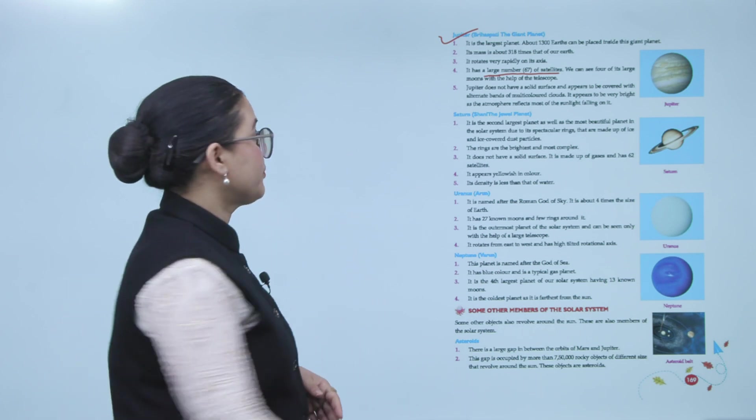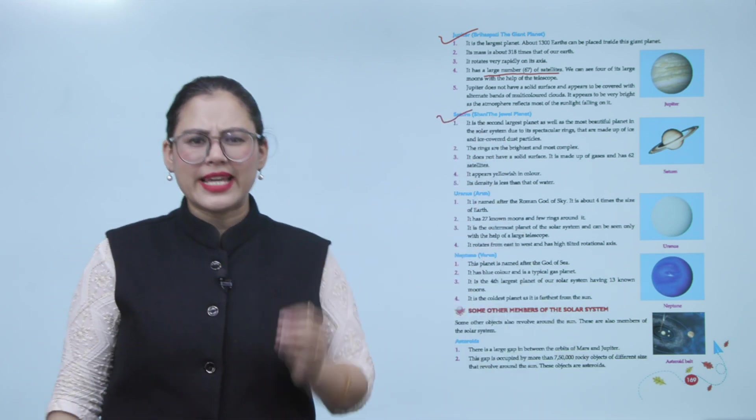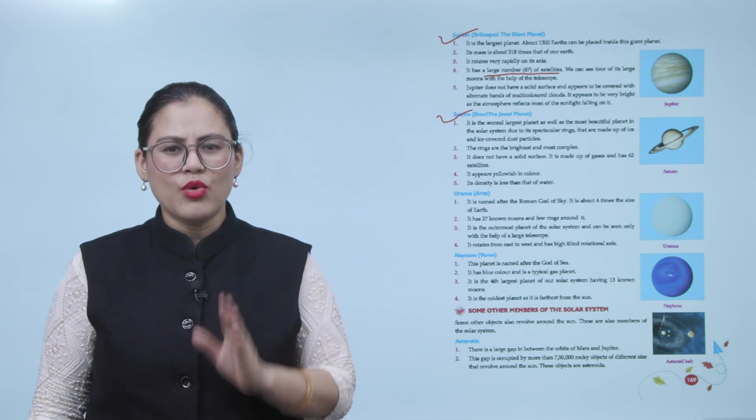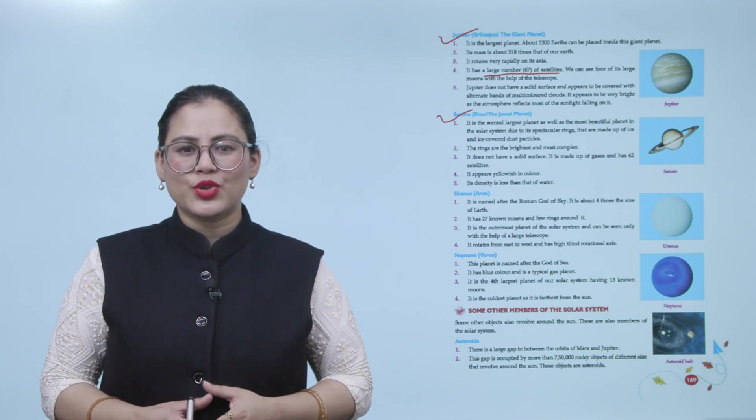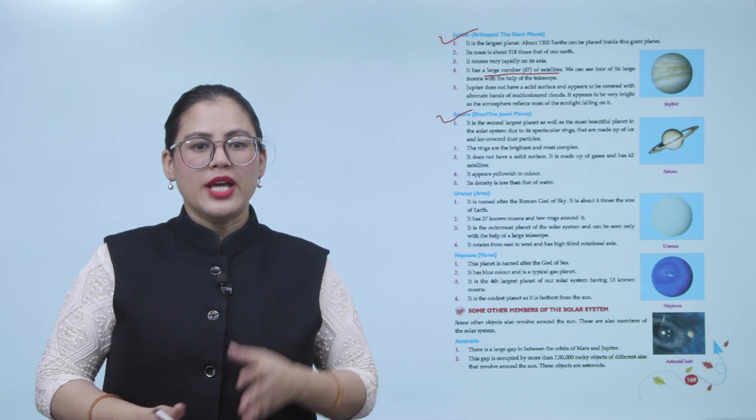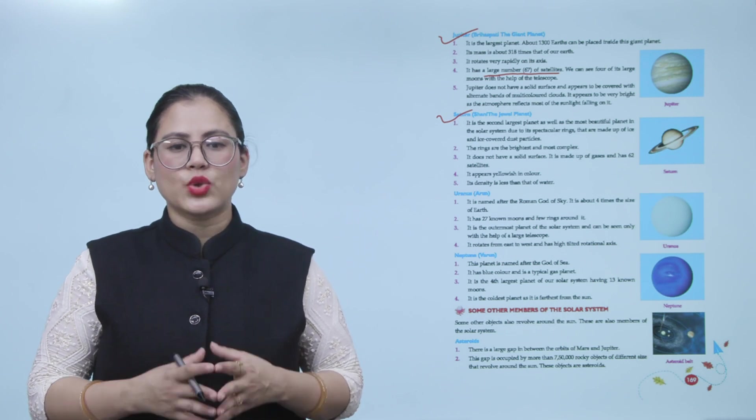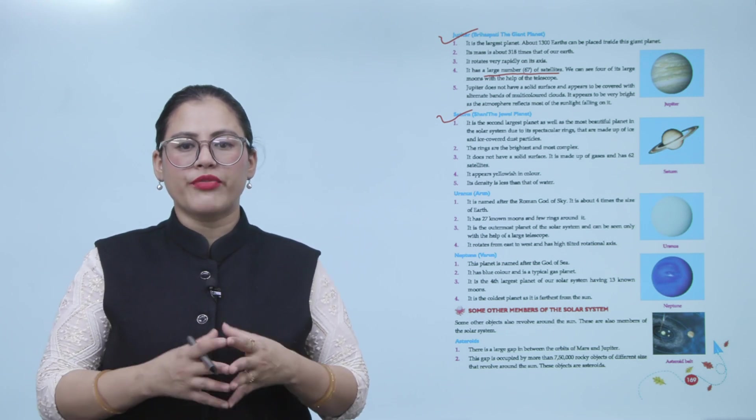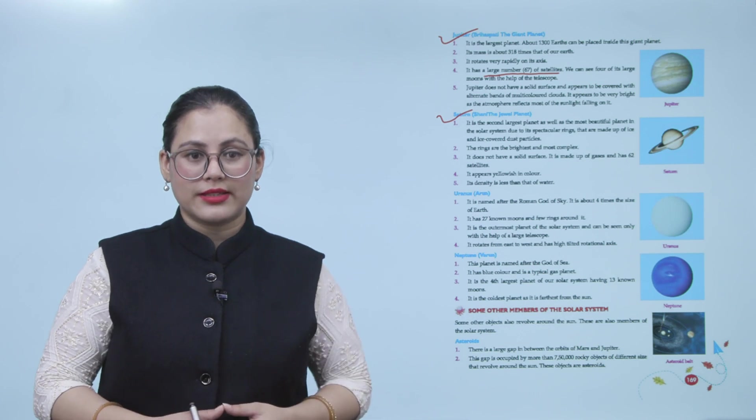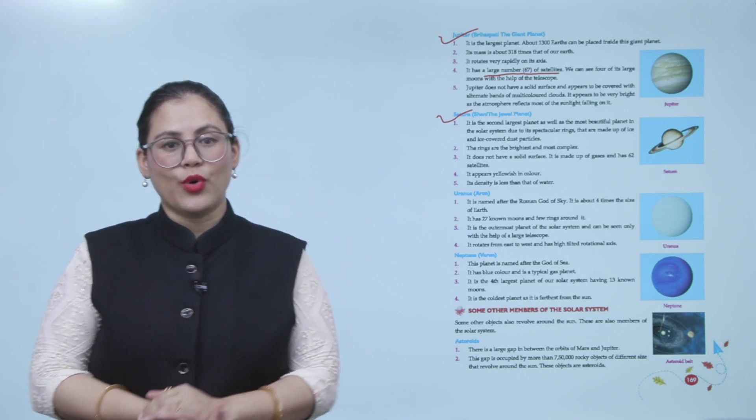Next planet is Saturn, or Shani, the jewel planet. Number one: It is the second-largest planet as well as the most beautiful planet in the solar system due to its spectacular rings that are made up of ice and ice-covered dust particles. Number two: Their rings are the brightest and most complex. Number three: It doesn't have a solid surface. It is made up of gases and has 62 satellites. It appears yellowish in color. Its density is less than water.